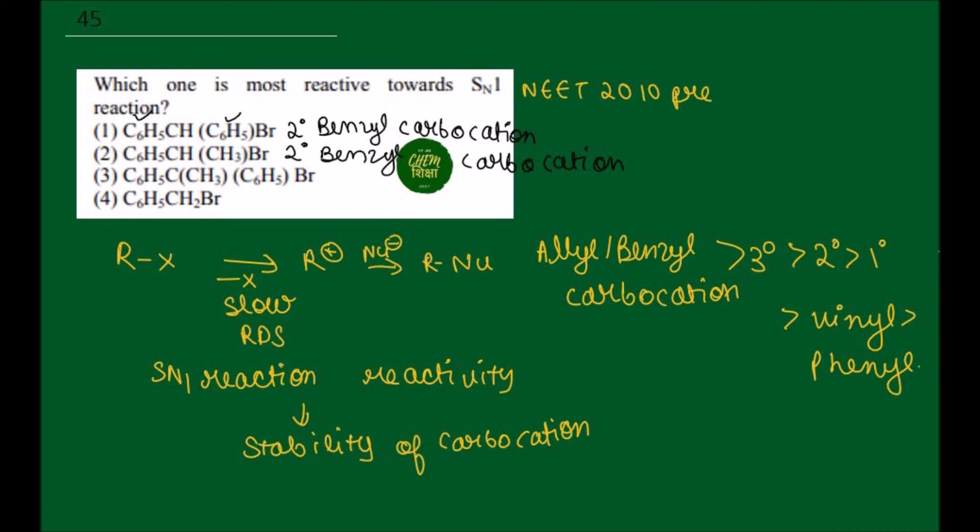Next we have the third option: C6H5-C(CH3)(C6H5)-Br. This is our 3 degree benzyl carbocation. 3 degree benzyl carbocation is the most stable in comparison of the first two.